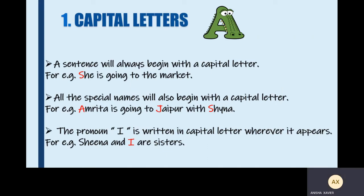The first one is capital letters. A sentence will always begin with a capital letter. For example, 'She is going to the market.' Here the first letter S is in capital letter. Second point: all the special names will also begin with a capital letter. For example, 'Amrita is going to Jaipur with Shaina.' Here we have three special names — Amrita, Jaipur and Shaina. Amrita and Shaina are names of people; Jaipur is the name of a place, so it's written with a capital letter.